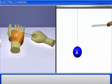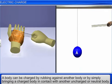These experiments prove that a body can be charged by rubbing against another body or by simply bringing a charged body in contact with another uncharged or neutral body.